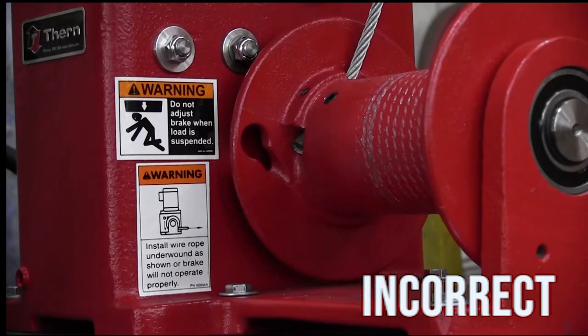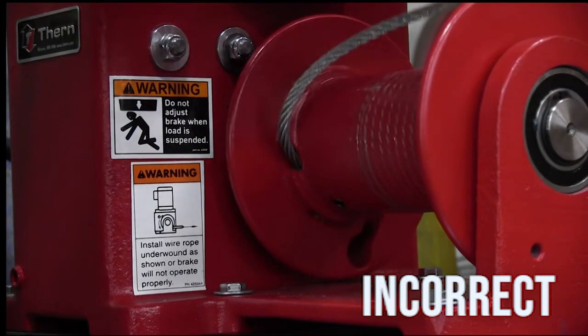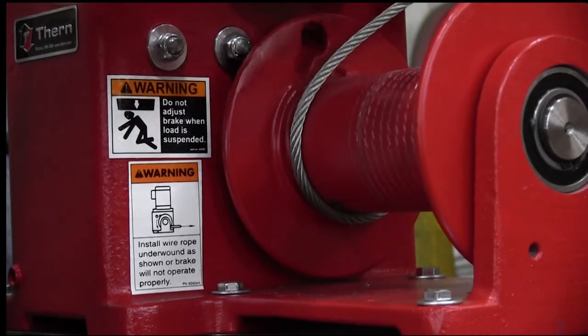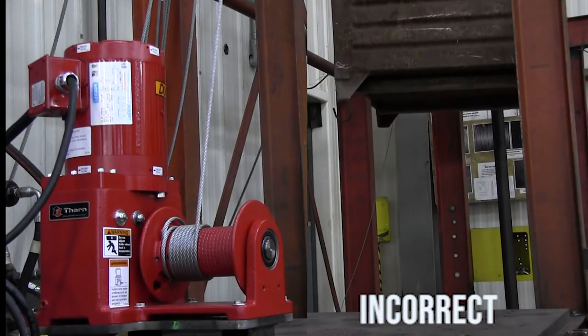Now we will demonstrate the improper spooling of the cable, overwound in this case, and how it will allow the load to back drive through the gearing. This is because the sprags are not wedging in this direction.